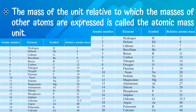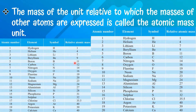The mass of the unit relative to which the masses of other atoms are expressed is called the atomic mass unit. Let's learn the relative atomic masses of the first 20 elements: hydrogen H is 1, helium 4, lithium 7, beryllium 9, boron 11, carbon 12, nitrogen 14, oxygen 16, fluorine 19, neon 20. You need to learn these values by heart.